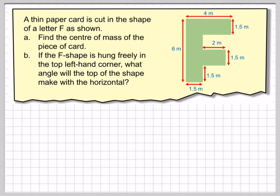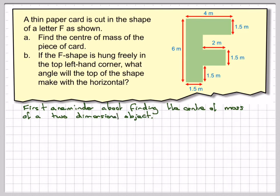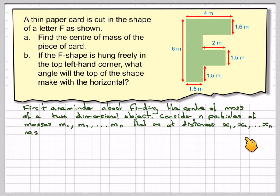We'll come back and look at part B in a minute. First of all, first a reminder about finding the center of mass of a two-dimensional object. Consider n particles of masses m1, m2 up to mn that are a distance x1, x2, xn respectively from a fixed origin O.